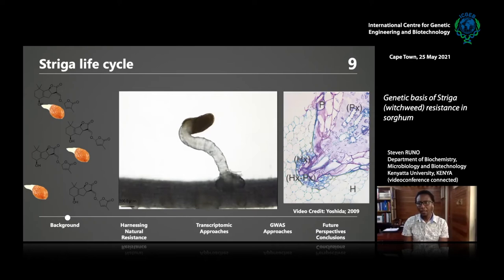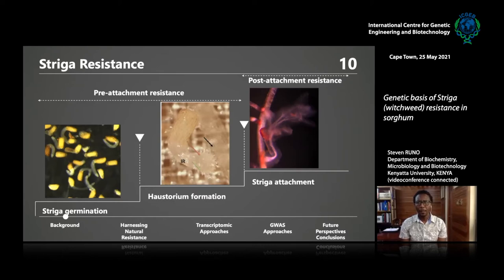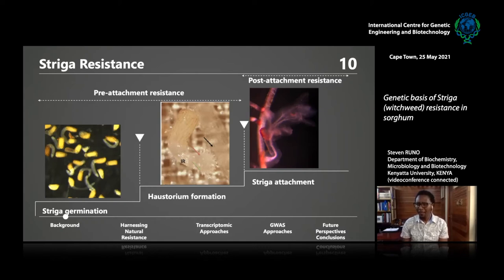These two critical stages also form important control points for Striga. We broadly categorize them into pre-attachment resistance — germination mechanisms before Striga has attached — and post-attachment resistance mechanisms that occur after Striga has attached. Pre-attachment resistance mechanisms are determined by whether the host is releasing germination stimulants or haustorium-inducing factors. If not, those are considered resistant hosts, because they won't stimulate the parasite to germinate.